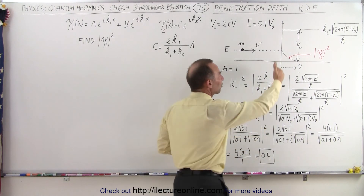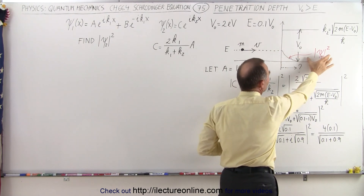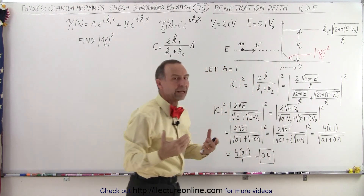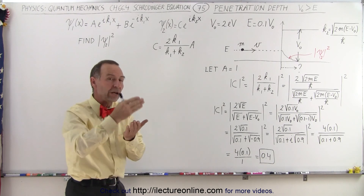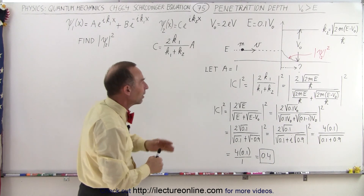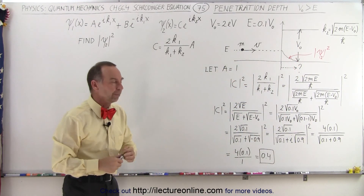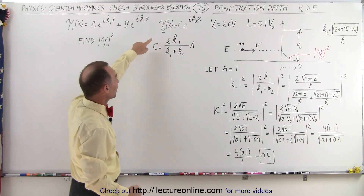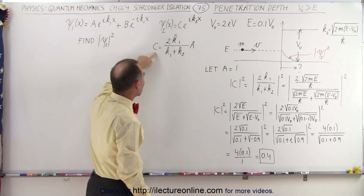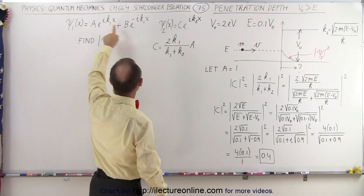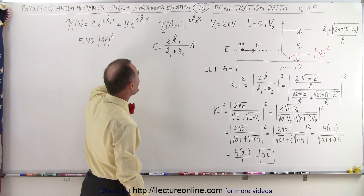We can define that exponential decaying function by the wave function in region 2 — specifically the magnitude of it, squared. We need to find what the magnitude of that wave function squared is equal to, and that will give us an equation describing the penetration. We'll figure out how far into that step the penetration will be before it's essentially zero. Here's our wave function in region 2. The constant C in a previous video was defined in terms of the constant A, which is the portion of the wave function in region 1 that represents the particles moving to the right.